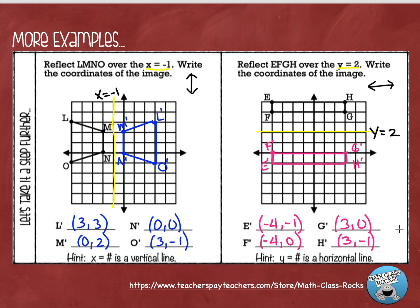Remember that reflections are just mirror images. You always want to highlight the line of reflection — that is the most important thing to remember. Then you are just counting spaces, making sure the image is an equal distance on both sides of the line of reflection. If you need to go back and watch the video and see the examples again, you should certainly do that. If you have questions, please reach out to your teacher. We are always here to help you. See you guys next time.